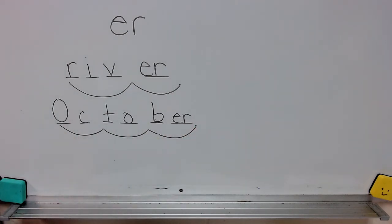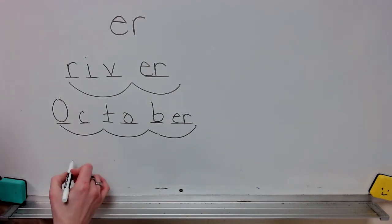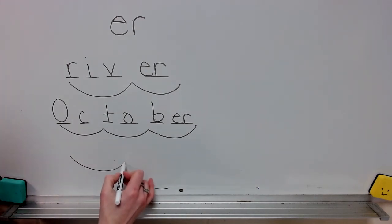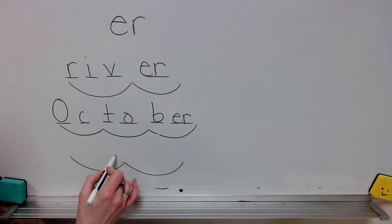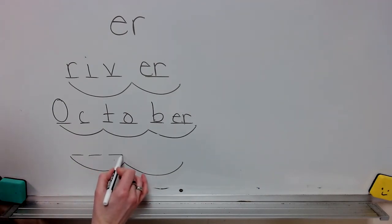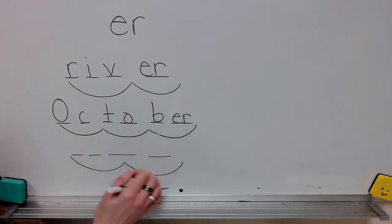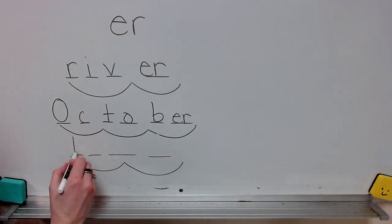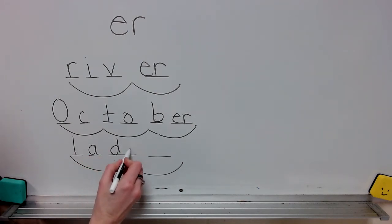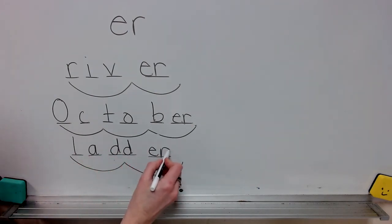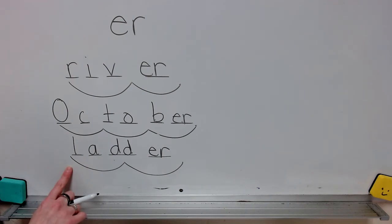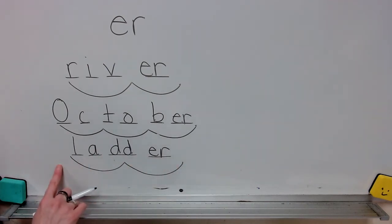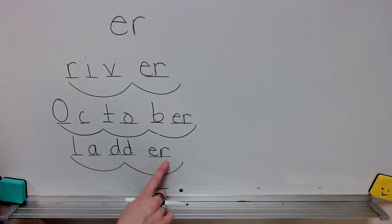The next word is ladder. What word? So the syllables are lad-der. This has a double consonant here. Ladder. Write the spelling for ladder. Check it and correct it. What word? Spell ladder. Ladder. Word. Yes, ladder.